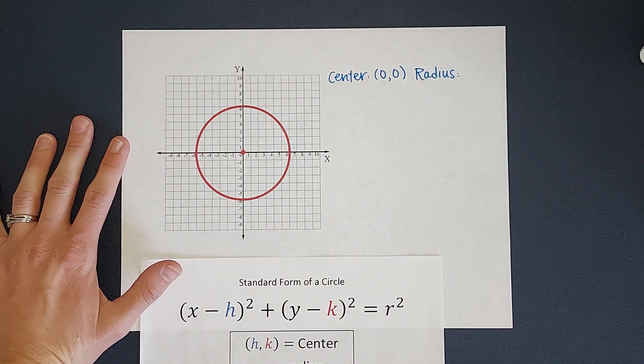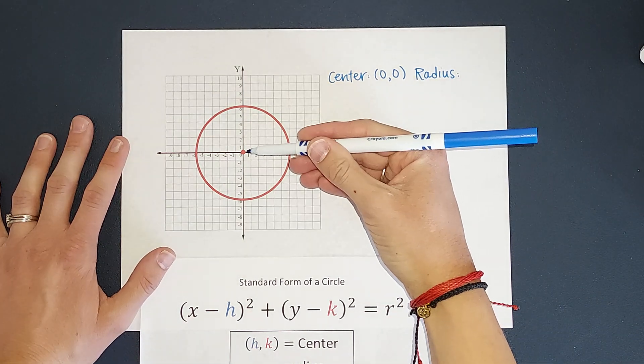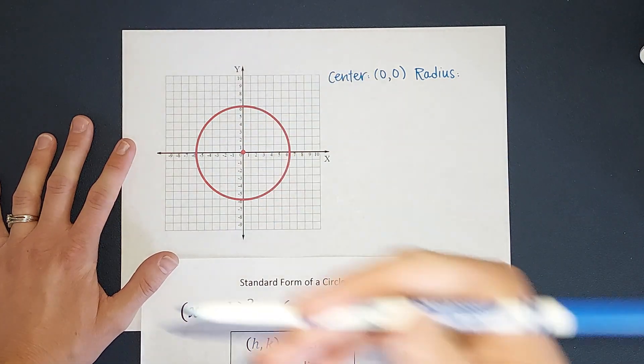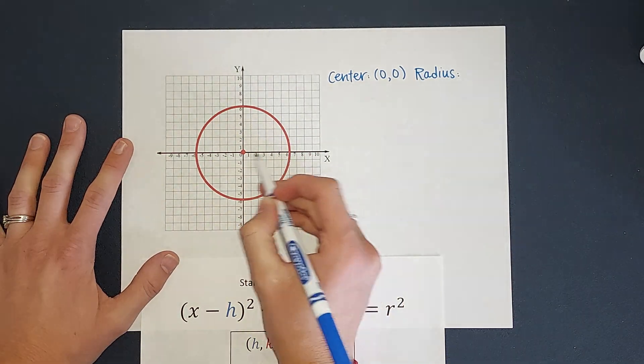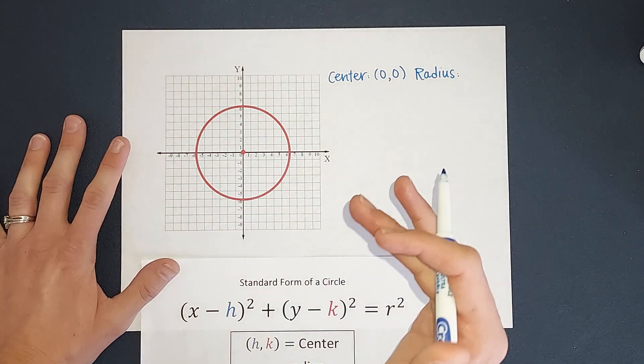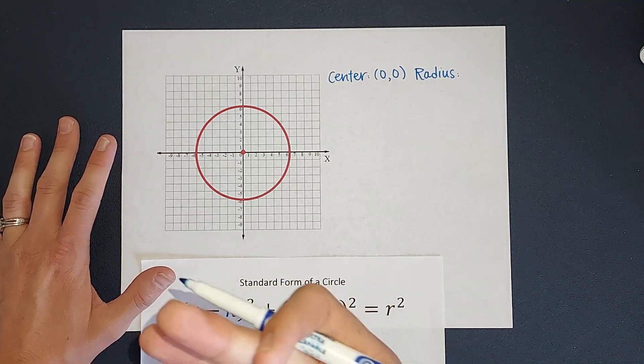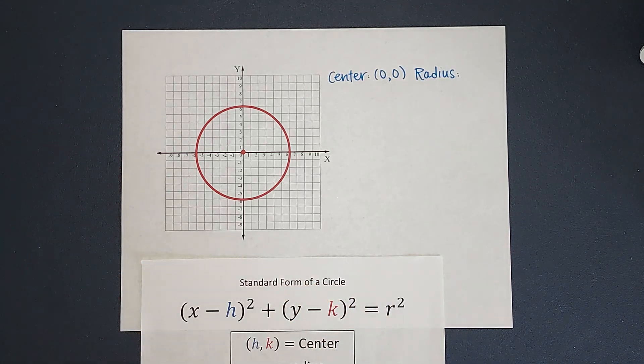Now my radius is a distance. It's the distance from the center of my circle to the edge of my circle. So it goes in every direction, but the easiest way for us to find it is just to be able to count it where it goes through cleanly.